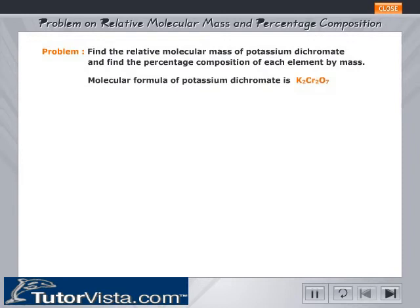The molecular formula of potassium dichromate is K2Cr2O7. Given the atomic mass of potassium equal to 39.1, chromium equal to 52, and oxygen equal to 16.